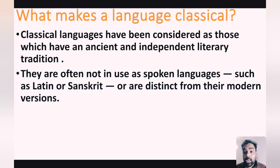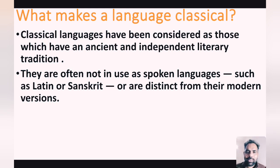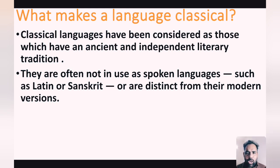Classical languages have been considered as those which have an ancient and independent literary tradition. A language can be considered a classical language when it fulfills certain parameters — it must be ancient and have an independent literary tradition. They are often not used as spoken languages, such as Latin and Sanskrit, or are distinct from their modern versions.